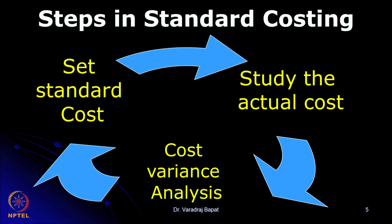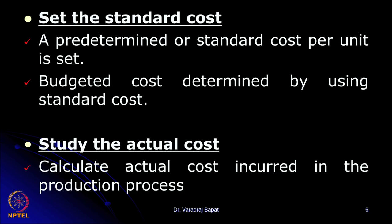These are the steps in standard costing. First, we set the standard. Then we study the actual, compute the variances, and analyze the variances — that is, break them down to understand the reasons. Setting the standard means determining a predetermined or standard cost per unit, which is a budgeted cost determined based on standard costing principles.